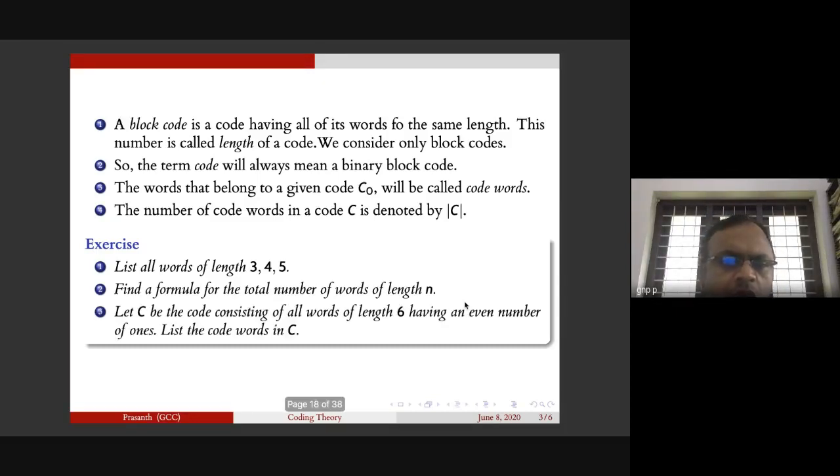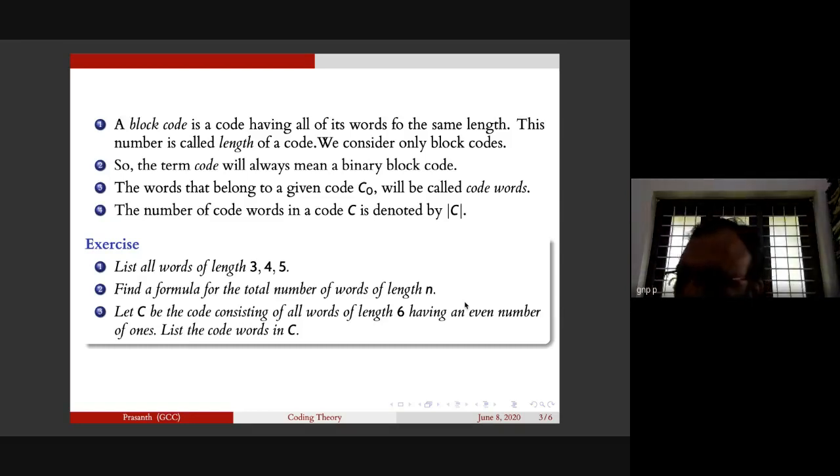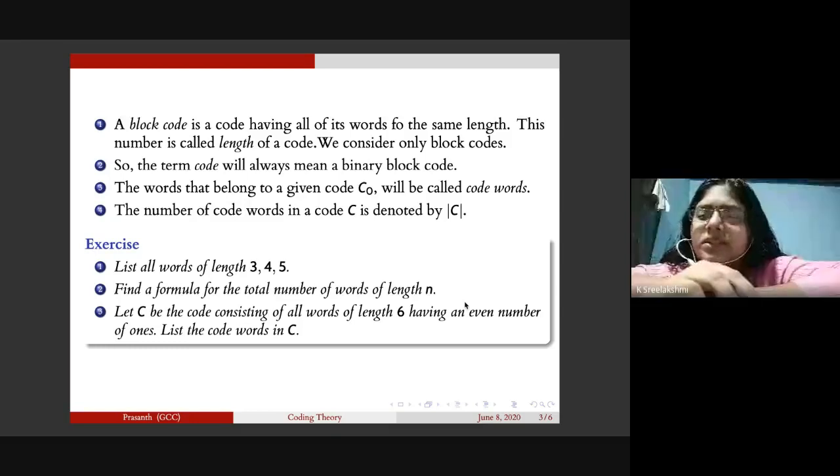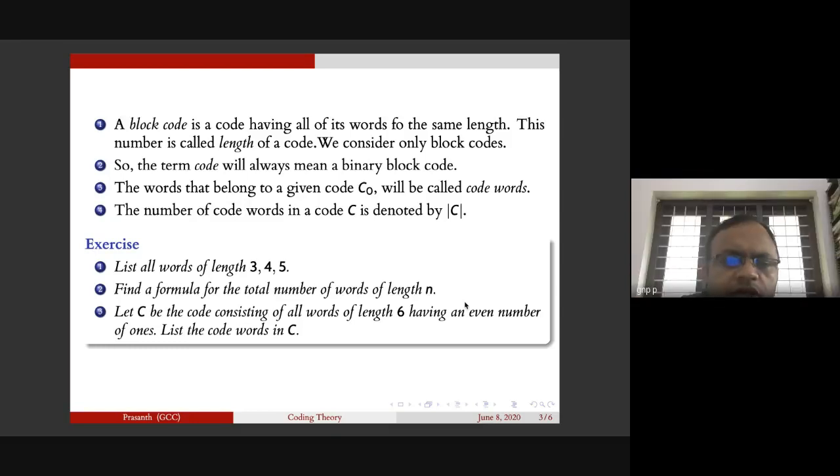Let C be the code consisting of all words of length six having an even number of ones. For example, suppose you have a code which consists of only zeros - will that code be in this C? Zero is an even number, so yes, it will be included.